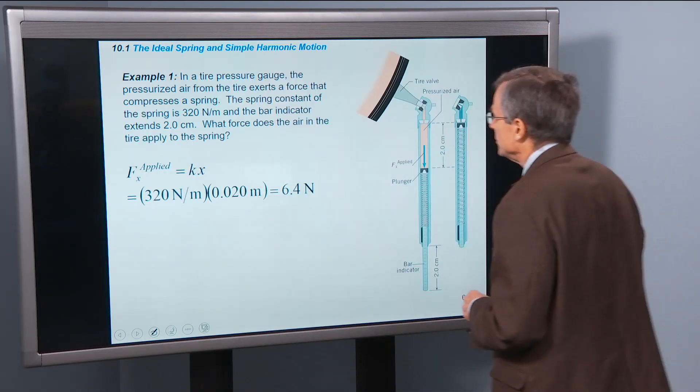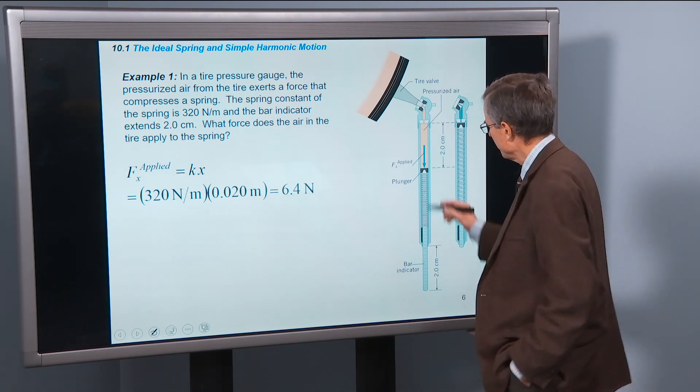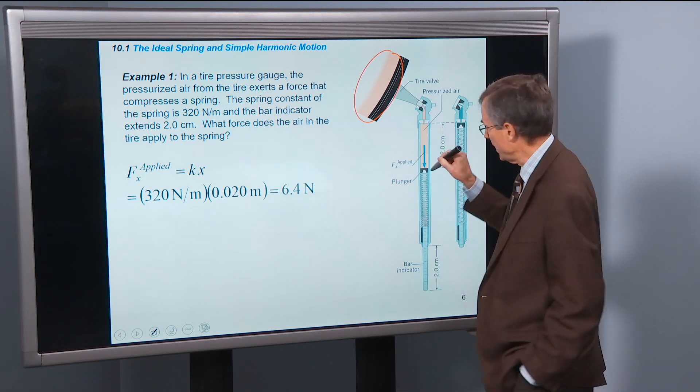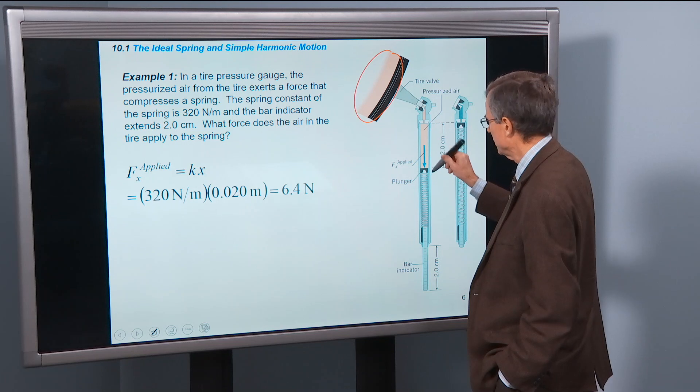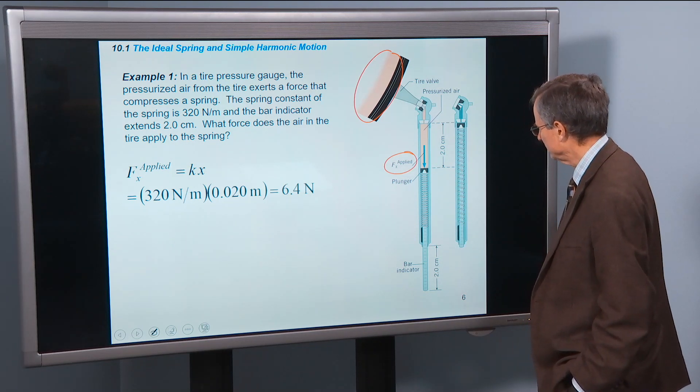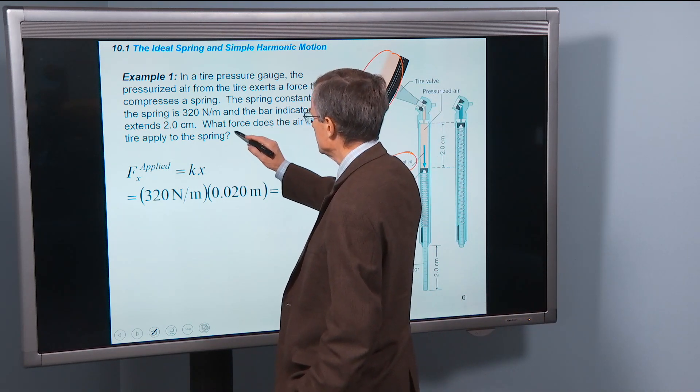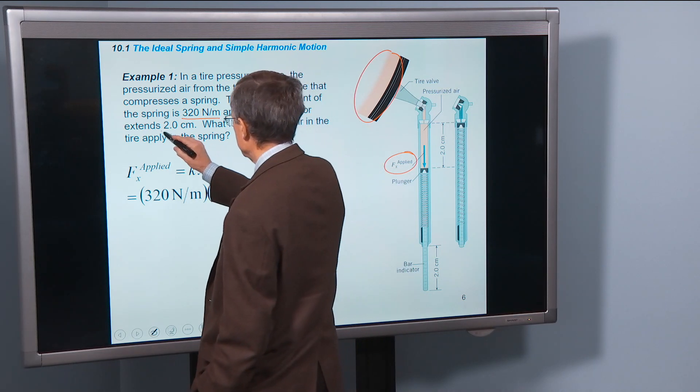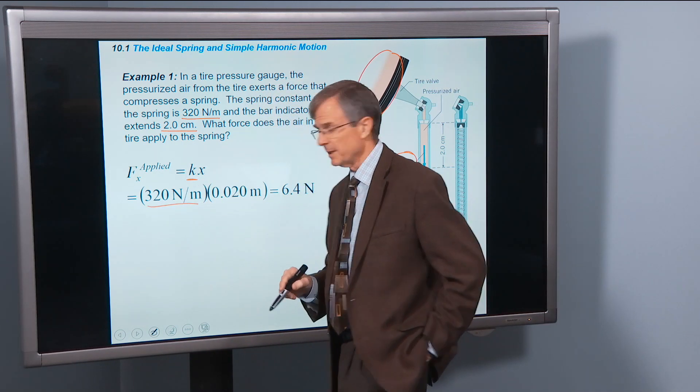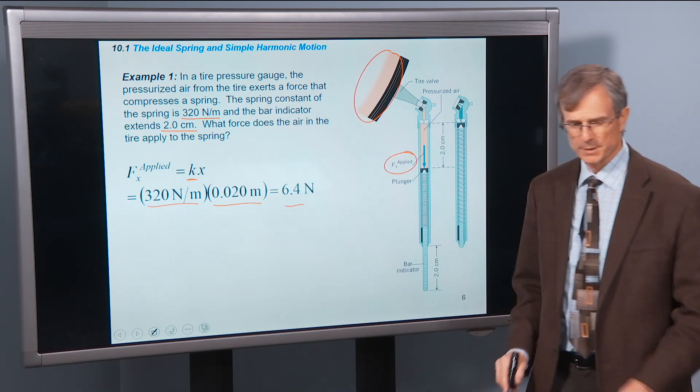Tire pressure gauge. The pressurized air from the tire exerts a force that compresses a spring. So this is your tire, and that compressed air comes into here, pushes down on a plunger, and exerts a force, an applied force on this spring. And if the spring constant in the spring is 320 newtons per meter, and the bar indicator extends 2 centimeters, then the applied force is going to be the spring constant, 320 newtons per meter, times 2 centimeters, which is 0.02 meters, and that applied force will be 6.4 newtons.